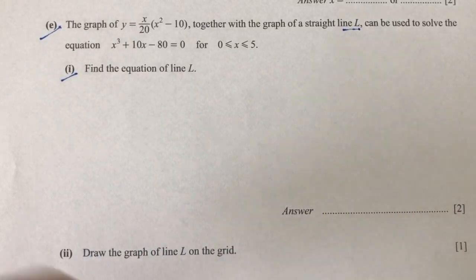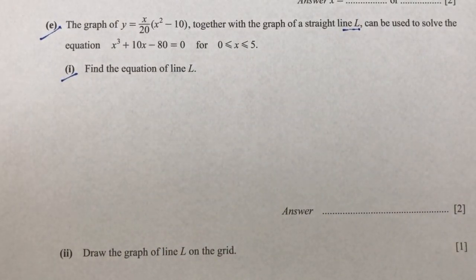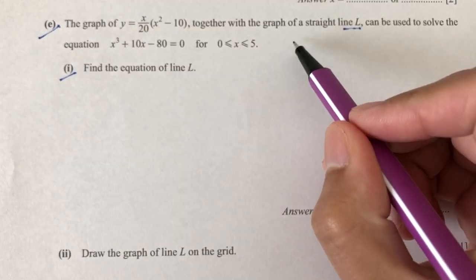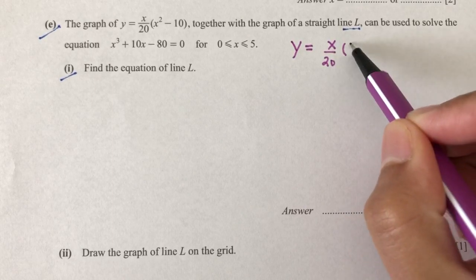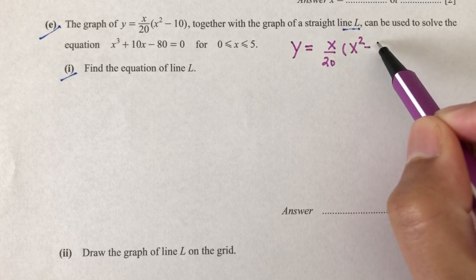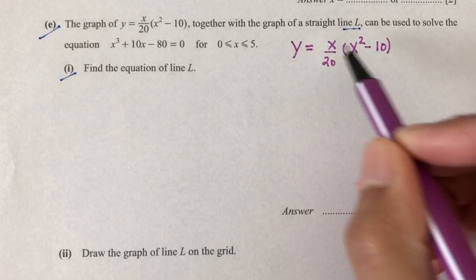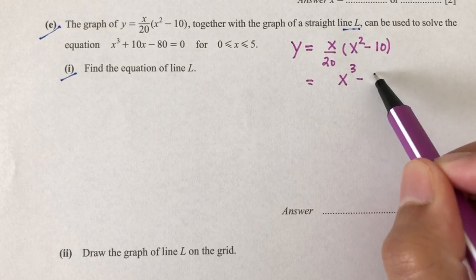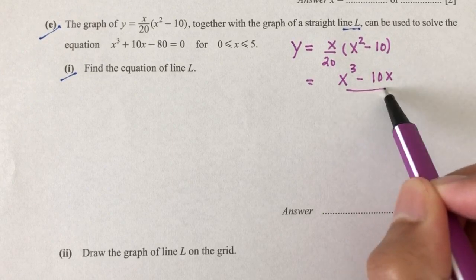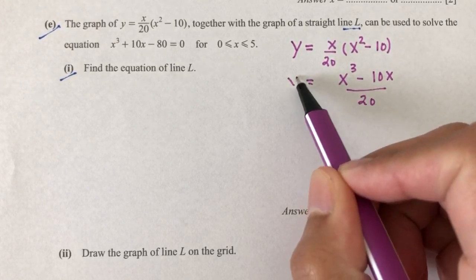So what we do here is we observe. We say y has been given to us as x over 20, x squared minus 10. So let's try to expand this. You will have x cubed minus 10x over 20. That is y.